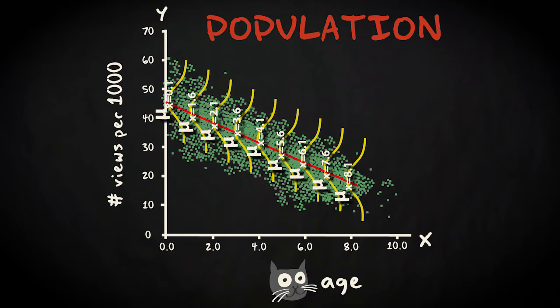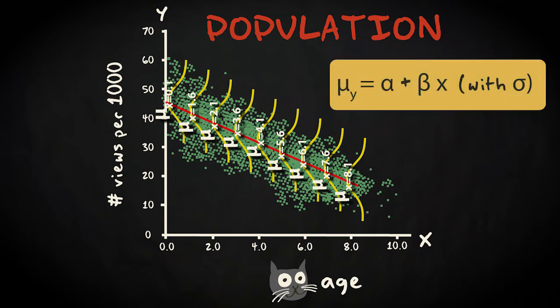We can express this using the following equation: μ sub y, the conditional population mean on the response variable y, equals α plus β times x, the predictor, with the same standard deviation, σ, at every x.